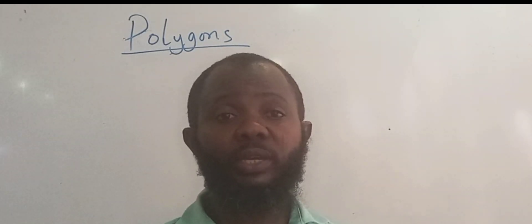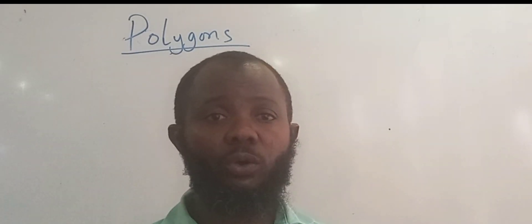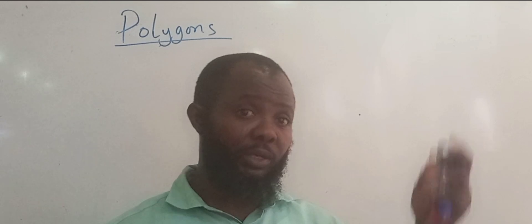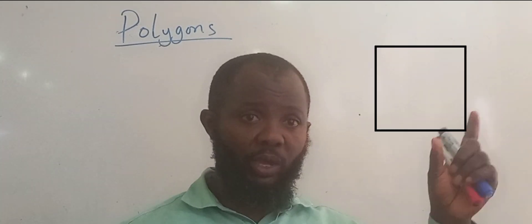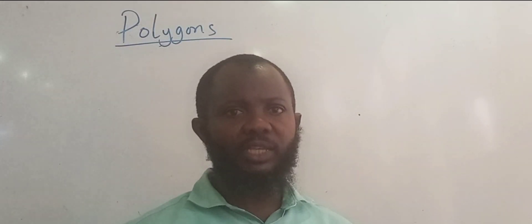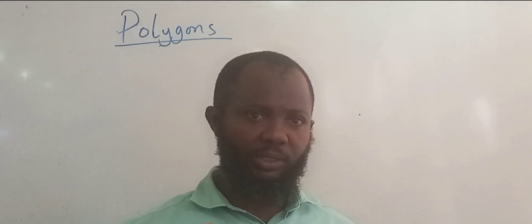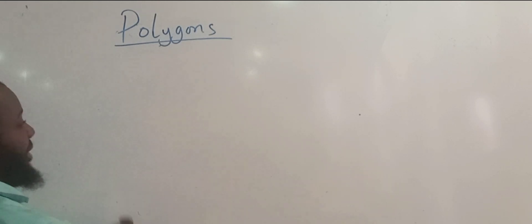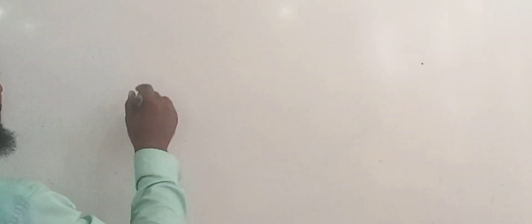Welcome to today's class. Today we are going to be discussing polygons. A polygon is a 2D shape that has at least three lines. As discussed earlier, we talked about plane shapes — we listed triangle, square, rectangle, parallelogram, and so on. But in this class we want to go beyond that. A polygon is a plane shape that has at least three sides.